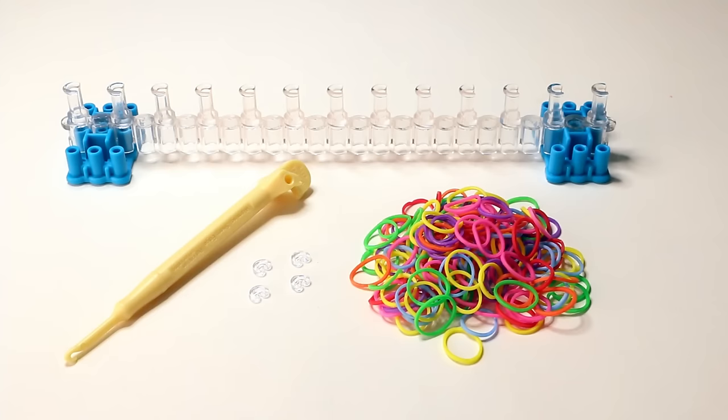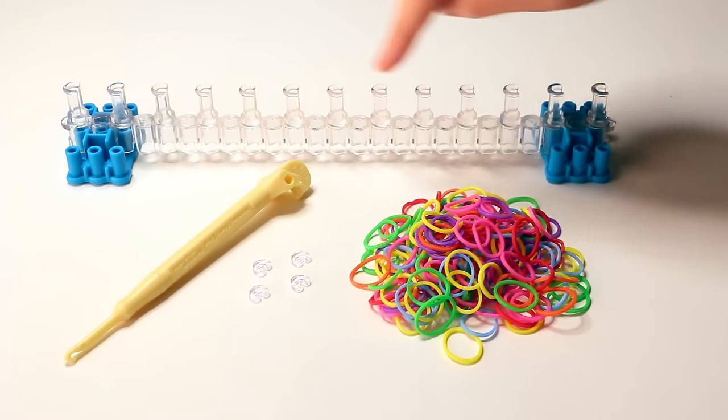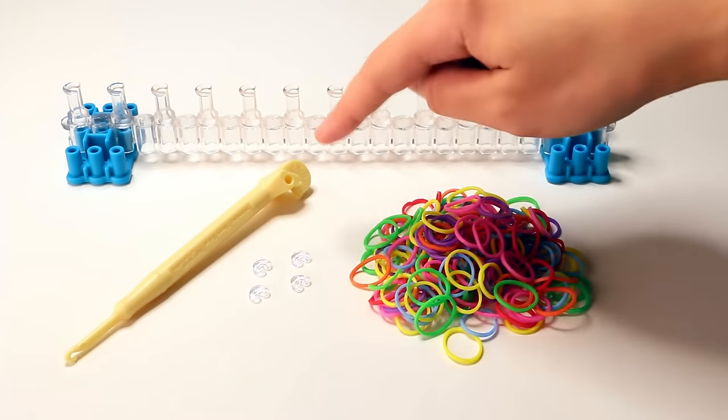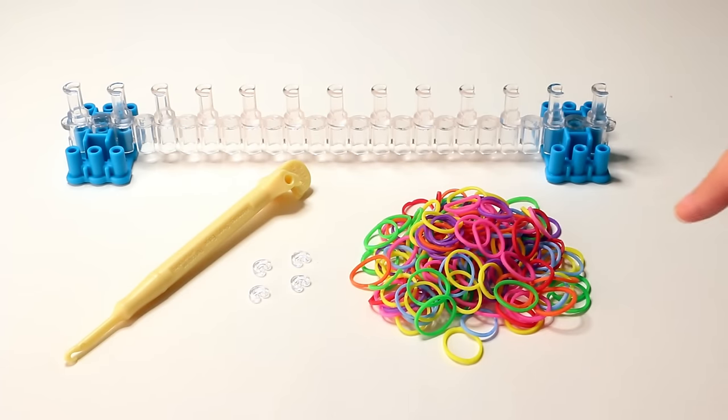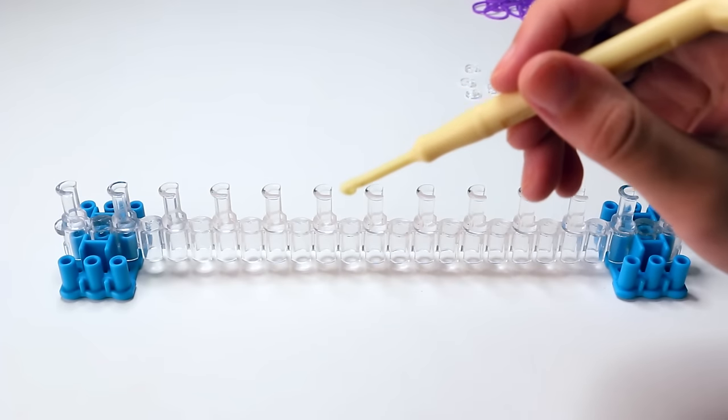For this bracelet you only need one row of pins from your rainbow loom, a hook, four C or S clips, and a bunch of loom bands in rainbow colors, and more info on how many in the description.